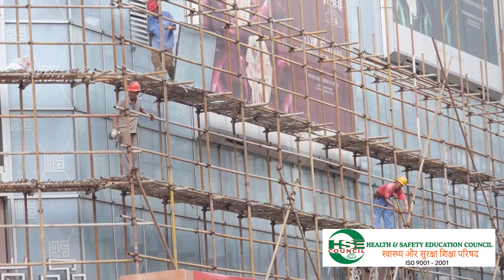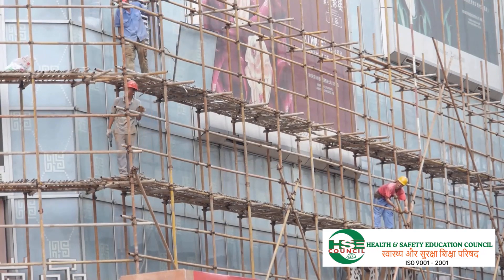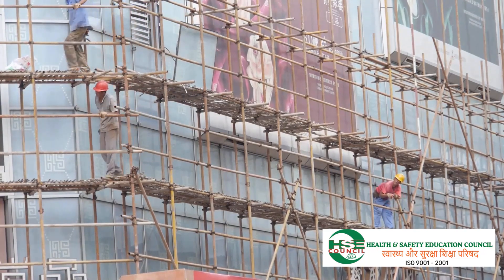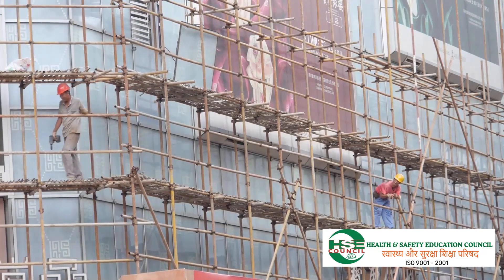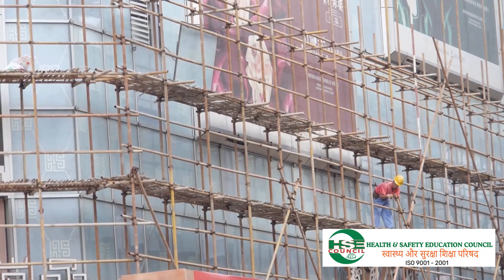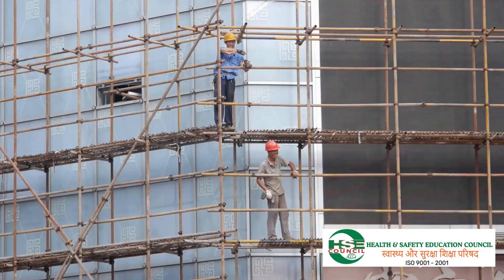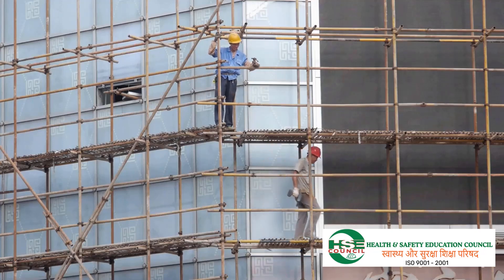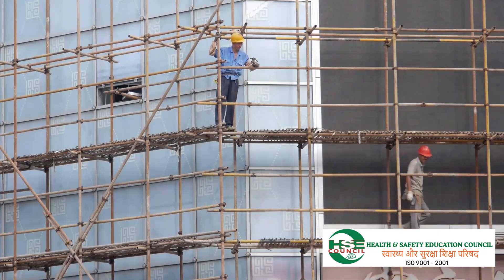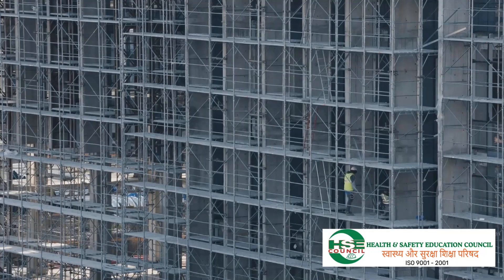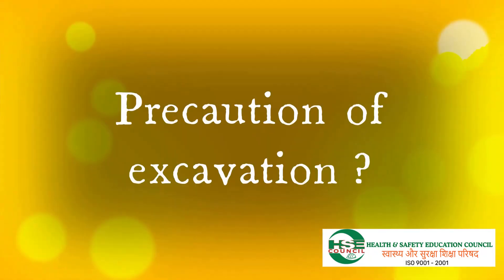Vertical poles should not be more than 6 feet apart. Chains and ropes used for the suspension of scaffolding should be secure. Never throw any materials from height. Use safety harness while working at above 6 feet. Proper ties to be arranged.